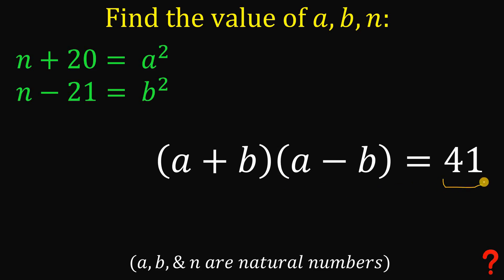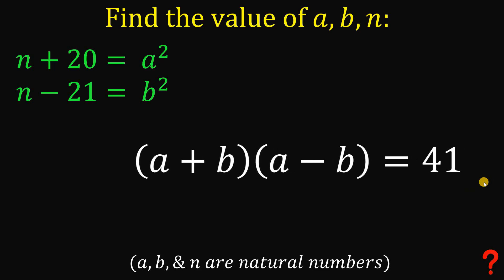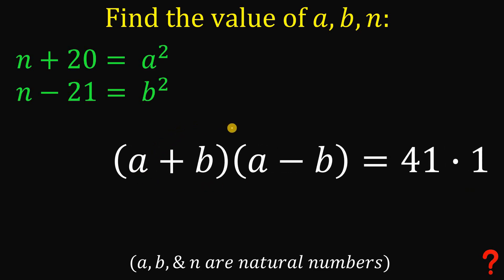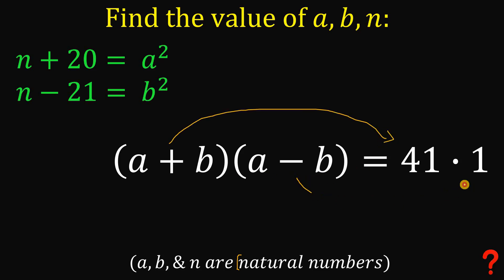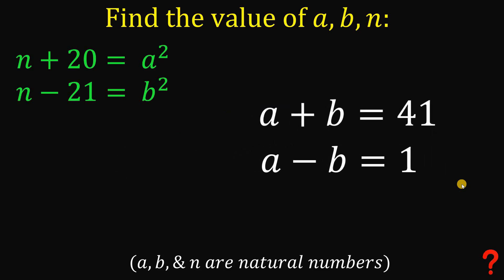We know that (a plus b)(a minus b) equals 41 times 1. Since a and b are natural numbers, a plus b must be greater than a minus b. So we assign a plus b equals 41 and a minus b equals 1.